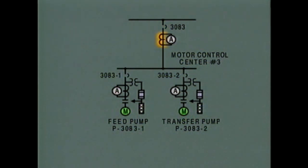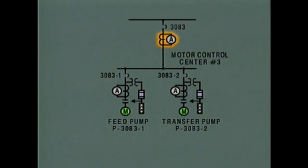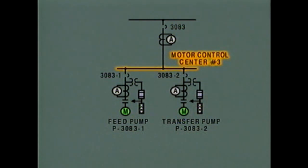From the circuit breaker, power flows through a current transformer. The current transformer produces a small current that's used by the ammeter. The ammeter provides an indication of the total current flow to the motor control center circuit.